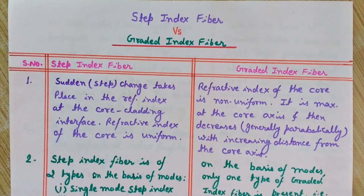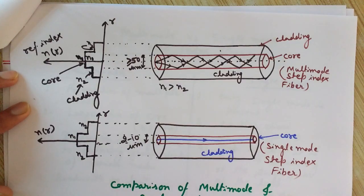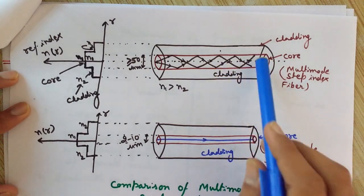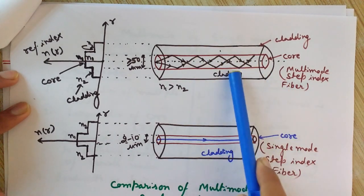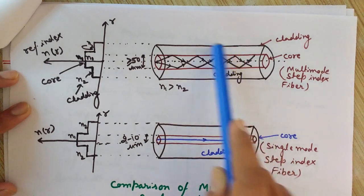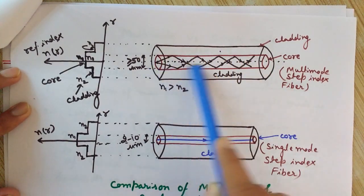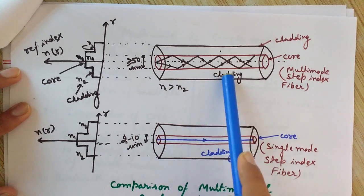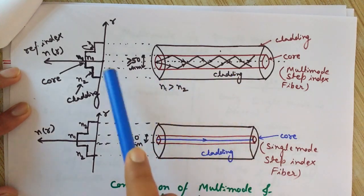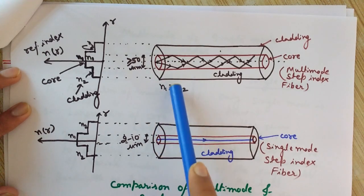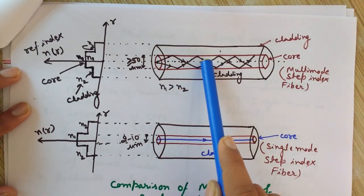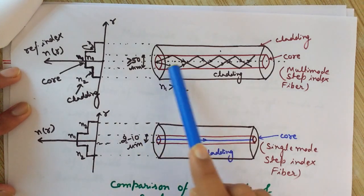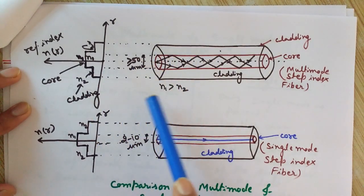Let me show you a step index fiber. There are two types: this is called a multi-mode step index fiber, and this is called a single mode step index fiber. This is the core of the optical fiber, having refractive index n1, and this is the cladding of the fiber with refractive index n2. The condition is n1 is greater than n2 — the refractive index of the core is more than the refractive index of the cladding.